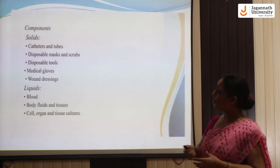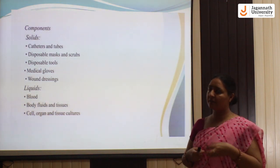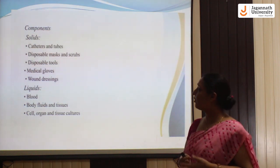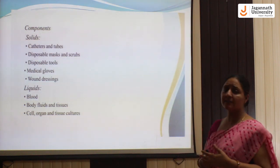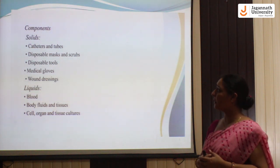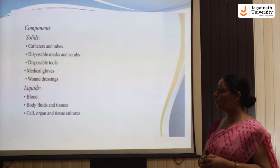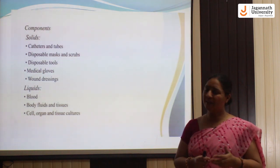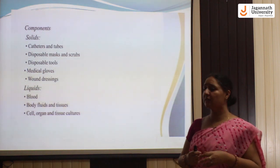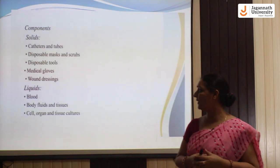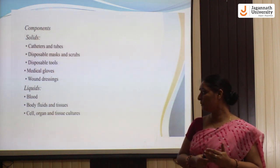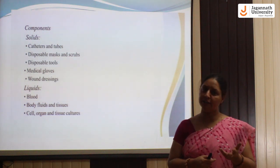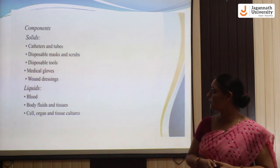These are the basic components released as biomedical waste. In solid form, they include catheters and tubes, disposable masks and scrubs, disposable tools, medical gloves, and wound dressings. In liquid category, biomedical waste may be blood, serums, body fluids, tissues, cells, organs, and tissue cultures from operation theatres.